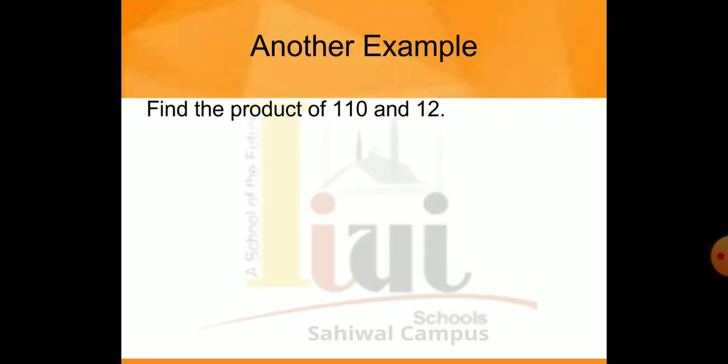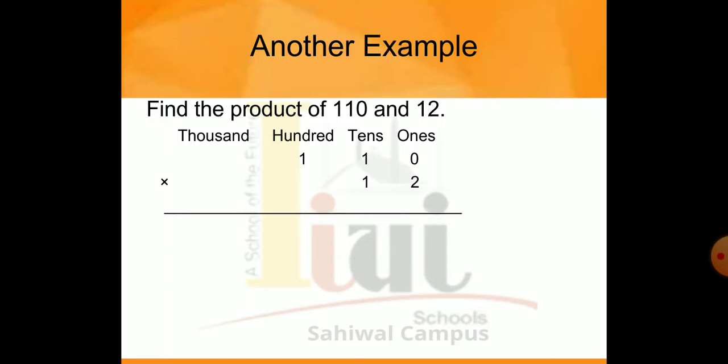On the same page number 49, there is another example: find the product of 110 and 12. Students, one value is 110, which is a 3-digit number, and 12 is a 2-digit number. We set up the columns: ones, tens, hundreds for 110, where zero is in the ones place, 1 in the tens place, and 1 in the hundreds place. For 12: 2 is in the ones column and 1 is in the tens column.